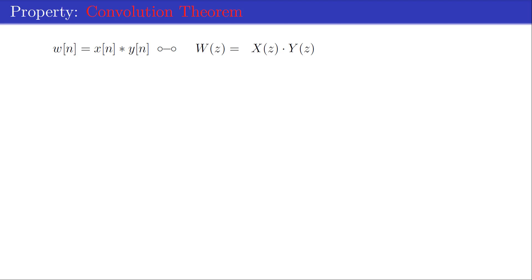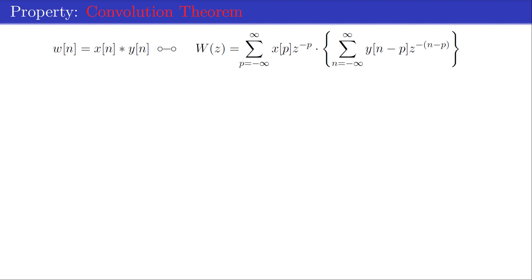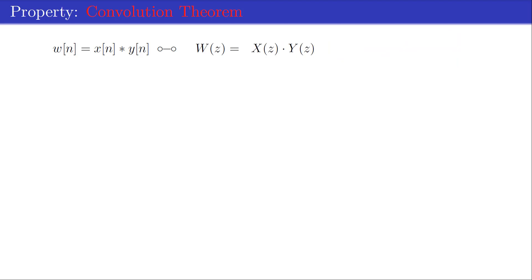Perhaps the most important z-transform property is the convolution theorem, which states that convolution in the time domain is mapped to multiplication in the z-domain. The proof starts by writing out the convolution sum and transforming to the z-domain, then changing the order of summations and adding an extra exponent z^{-p} in the first summation, compensating in the second. The first summation is X(z) and the second is Y(z), which finalizes the proof.